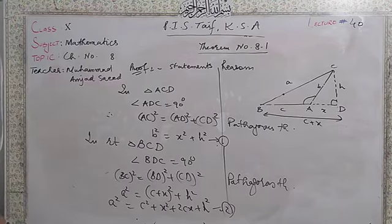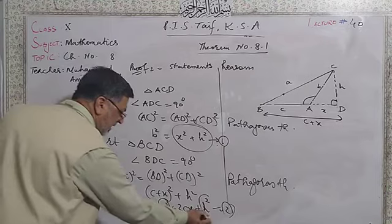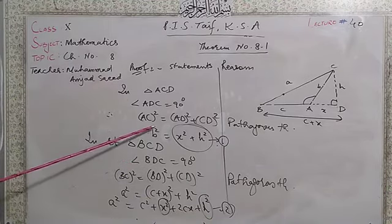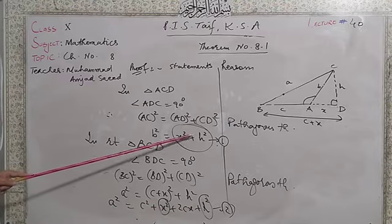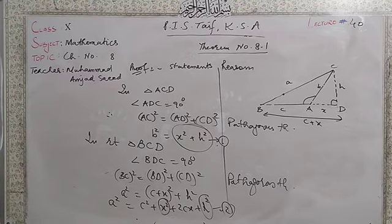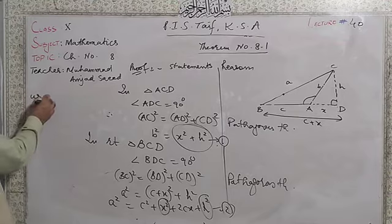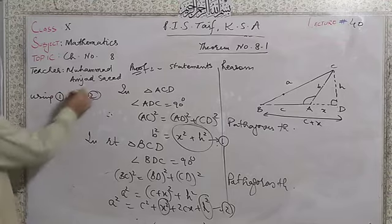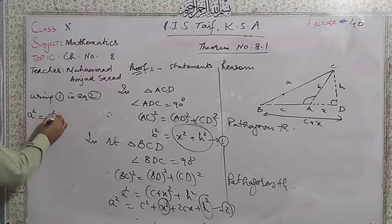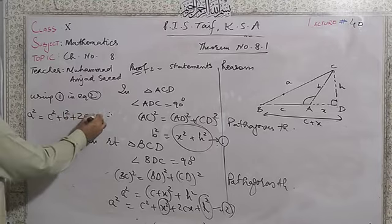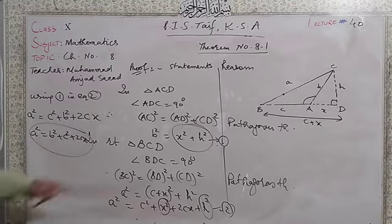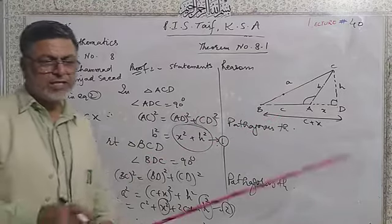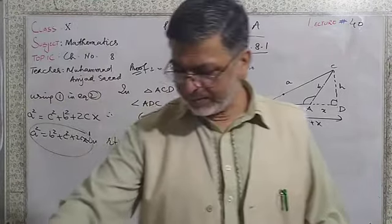Now, from equation 1 we know that x² + h² = b². Substituting this into equation 2: a² = c² + b² + 2cx, or equivalently a² = b² + c² + 2cx. That was your theorem number 8.1. I hope that you understood this theorem.